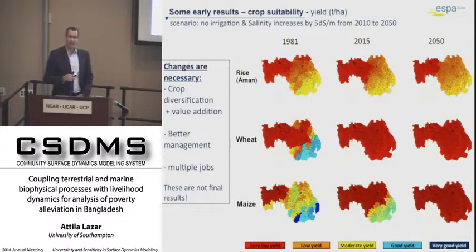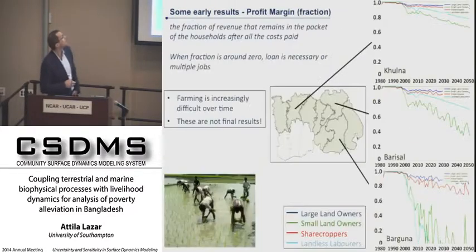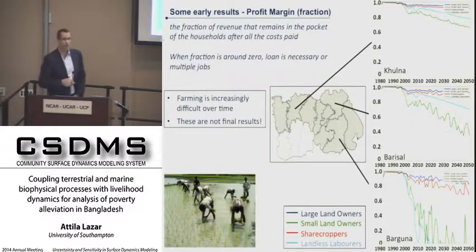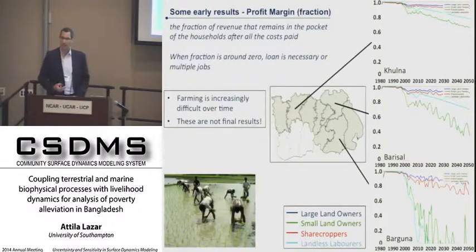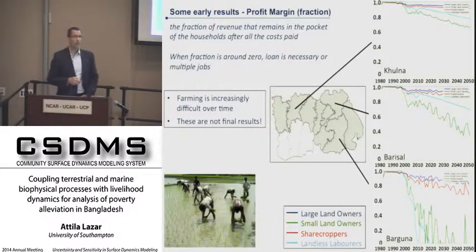Everything is preliminary and has to be updated when the researchers and colleagues have finalized their results. We can also do household-level indicators to give an indication of what is going on with people. For example, we can do profit margin calculations — what is the fraction of revenue that remains in your pocket when all costs are paid. Preliminary results show a quite distinct difference between regions of coastal Bangladesh.